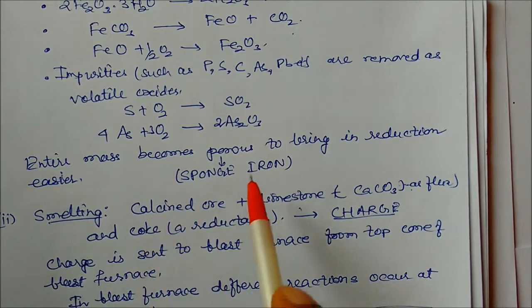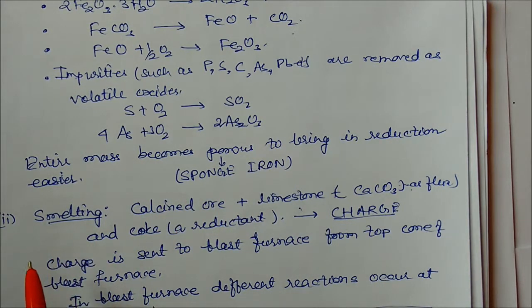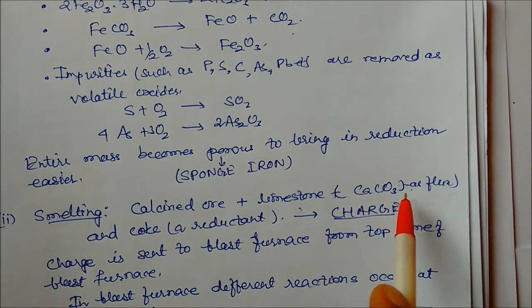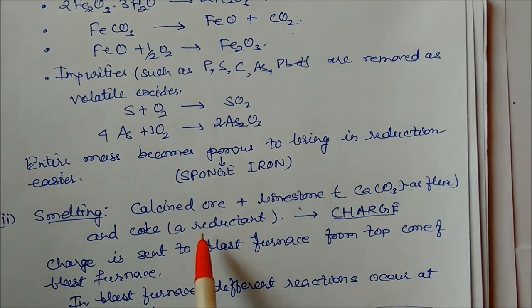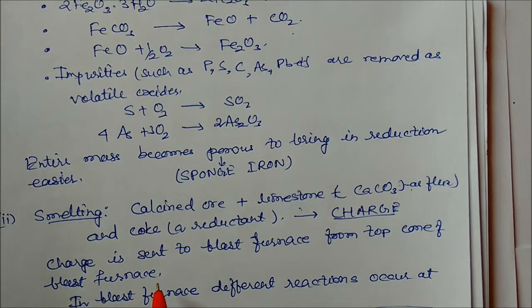The next process is called smelting. Here, limestone (calcium carbonate) acts as a flux and coke acts as a reductant. This whole material is called the charge. The charge is sent from the top cone into the blast furnace, where there are different temperature zones with different reactions.